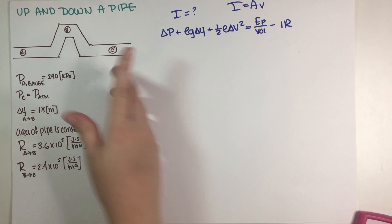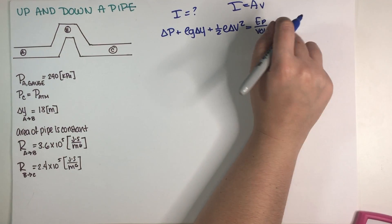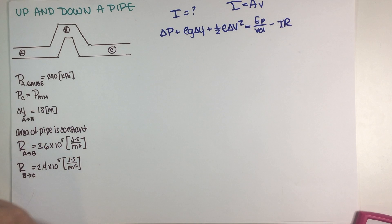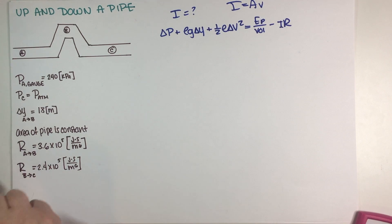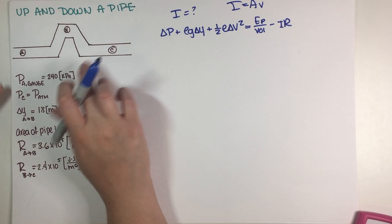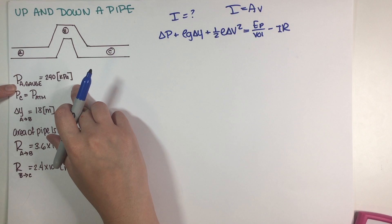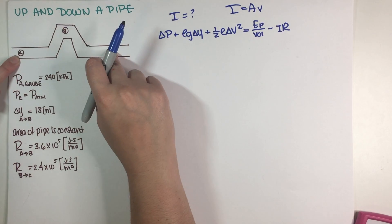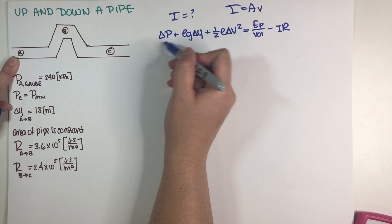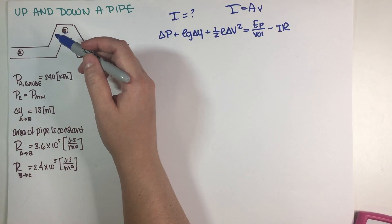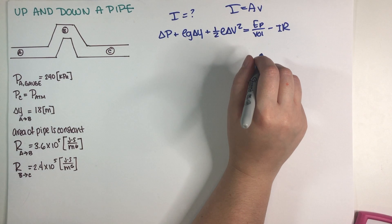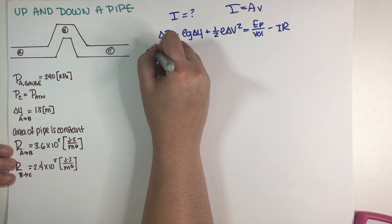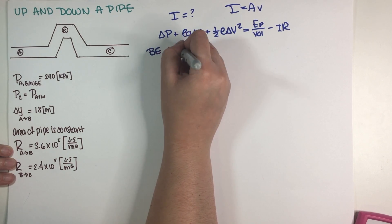We have to select which two points we're going to analyze, and obviously we want to figure out the value of the current term I. The two points I'm going to analyze are A and C, because I have both of the pressures there. If I chose A to B or B to C, I wouldn't know the pressure at B, so that wouldn't work. So I'm going to use the Bernoulli equation from points A to C.